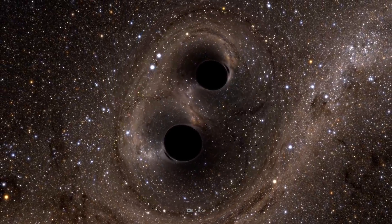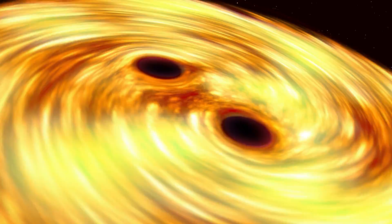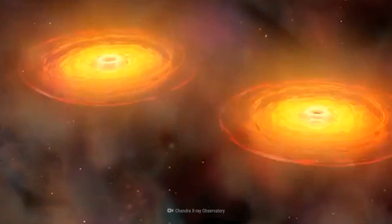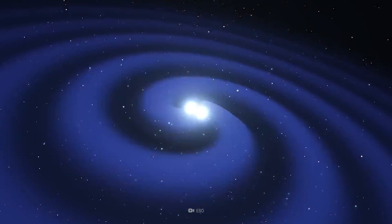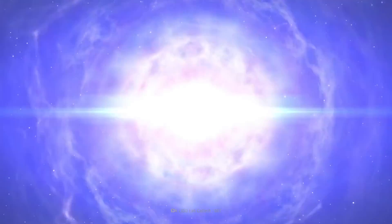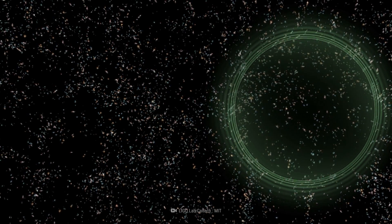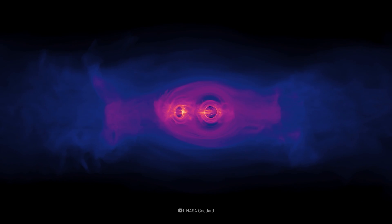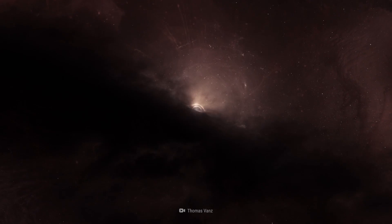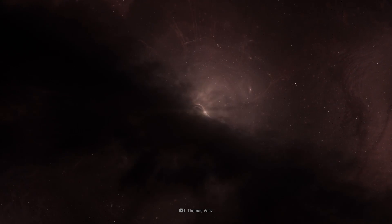1.3 billion years ago, two orbiting massive black holes, circling each other at 250 times a second, collided in a violent, universe-rippling explosion that sent waves of energy throughout the cosmos. In its wake, a new supermassive black hole formed over 60 times bigger than our Sun.